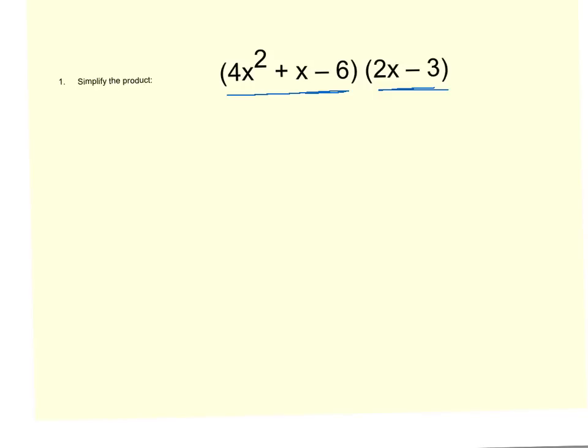You can start by remembering that the 4x² has to distribute with the 2x and with the -3. So that will give us 8x³, or 8x cubed, minus 12x².